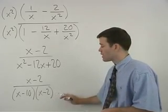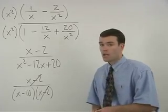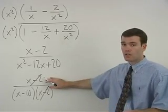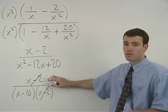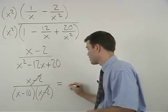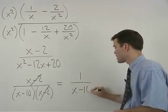So our x minus 2's cancel. And remember that when the numerator cancels out entirely, we leave a 1 in the numerator of our answer. So we have 1 over x minus 10.